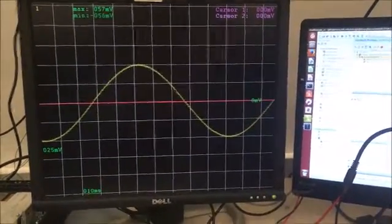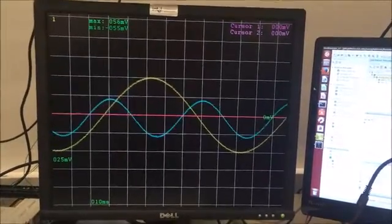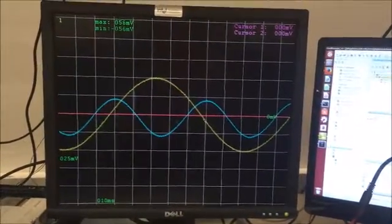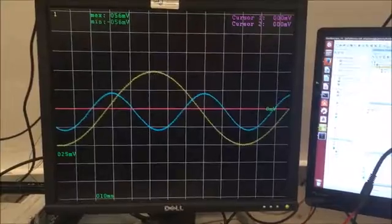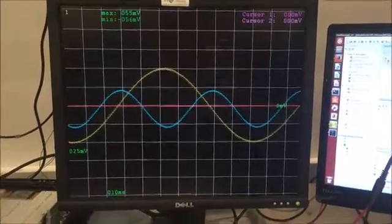Now I'll turn on the second function generator to demonstrate two channels. And this function generator is outputting a sine wave with two kilohertz frequency and an amplitude of 50 millivolts peak to peak.